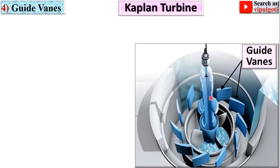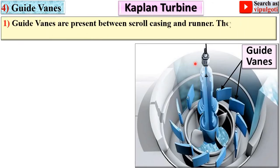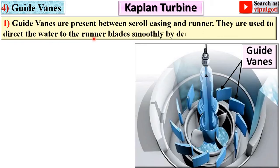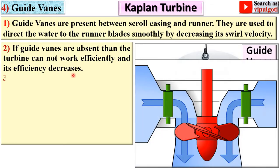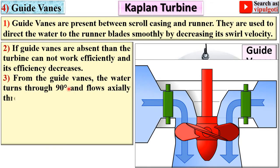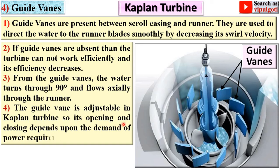Next part: guide vanes. Guide vanes are present between the scroll casing and the runner. They are used to direct the water to the runner blades smoothly by decreasing its swirl velocity. If guide vanes are absent, the turbine cannot work efficiently. From the guide vanes, the water turns through 90 degrees and flows axially through the runner blades. The guide vanes are adjustable in the Kaplan turbine, so their opening and closing depend upon the power requirement.